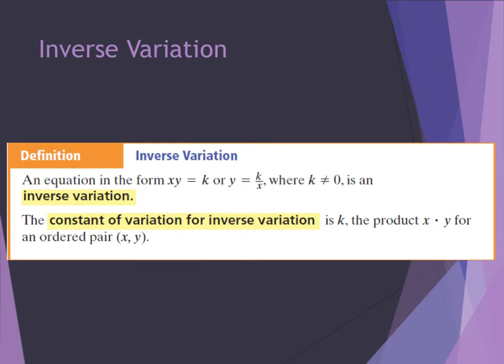By definition, inverse variation says an equation in the form of xy equals k, or y equals k divided by x, where k is not equal to 0, is an inverse variation equation. Just like with direct variation, the k value is still our constant, and in this case we find k by multiplying x and y together. If we're given an ordered pair, you can multiply those together to find your constant of variation, or you might be given other information and solve for k as well.